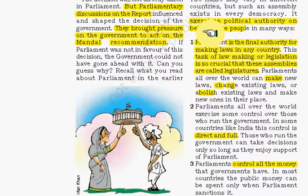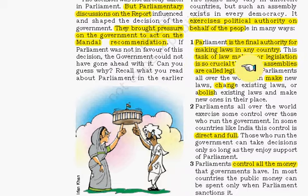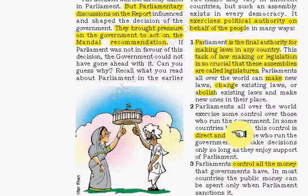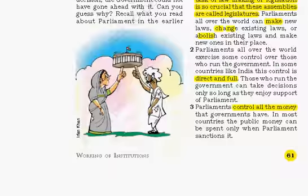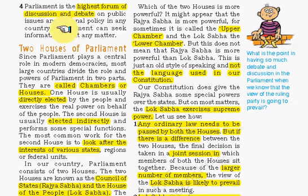Parliament is the final authority in making laws in any country. The task of law-making or legislation is so crucial that these assemblies are called legislatures. Parliament all over the world can make new laws, change existing laws, or even abolish existing laws. Parliament also has direct and full control over the whole country's money — how public money is spent is only sanctioned in Parliament. Parliament is also the highest forum for discussion and debate on public issues and national policy.